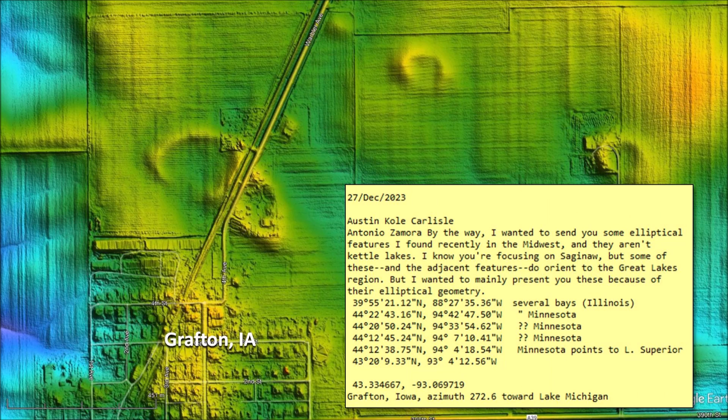I have received several notes from Austin Cole Carlyle suggesting locations of elliptical features that have not been marked in the LiDAR visualization survey by Michael Davies. Austin's latest notes said: 'I wanted to send you some elliptical features I found recently in the Midwest, and they aren't Kettle Lakes. I know you are focusing on Saginaw, but some of these and the adjacent features do orient to the Great Lakes region, but I wanted to mainly present you these because of their elliptical geometry.'